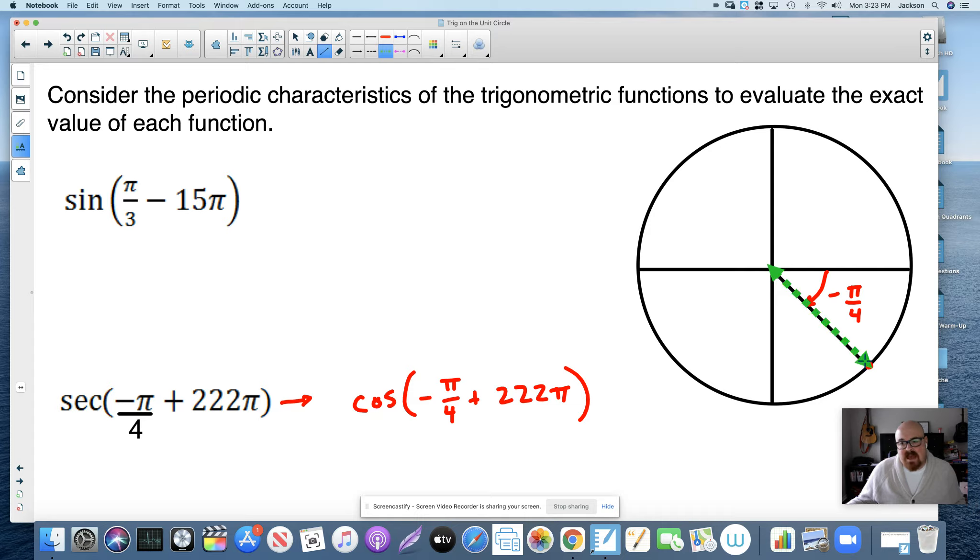If we add to this angle, that means we're rotating the arm this way. So if I add one full rotation around the unit circle to negative pi over 4, I'd still end up here, right? That would be the angle negative pi over 4 plus 2 pi. We started at negative pi over 4, we added one full rotation to end up here.